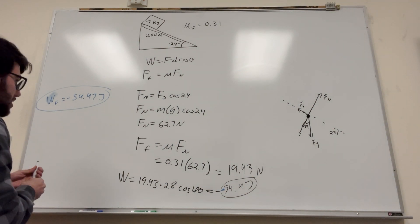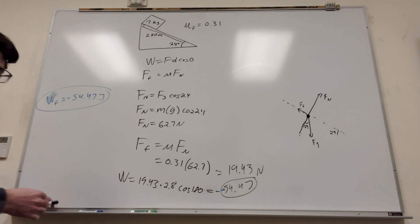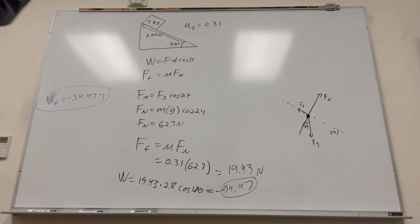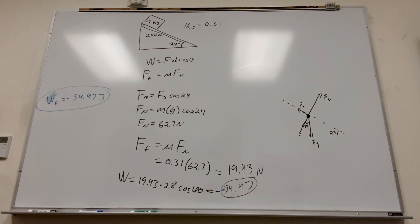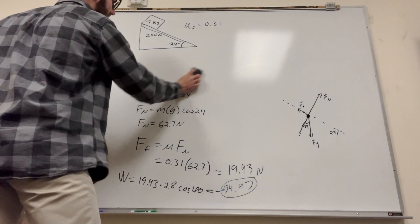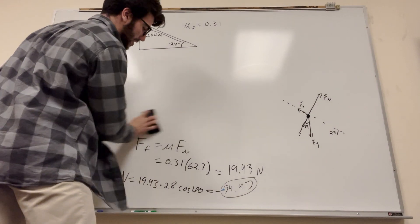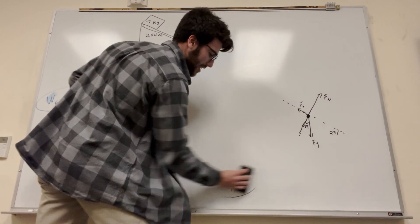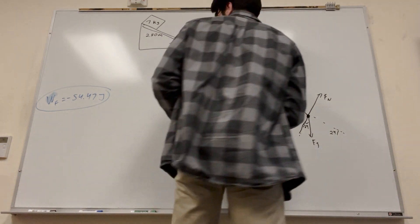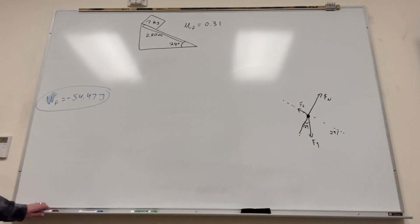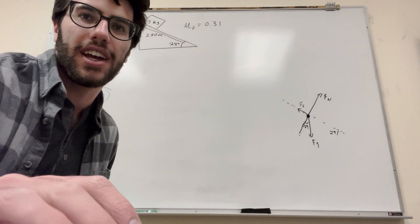Okay, so that's one number. I'm going to write that over here. Try not to make this video too long. So work done by friction is negative 54.47 joules. This is part 1. I'm going to go ahead and erase everything and start with part 2.